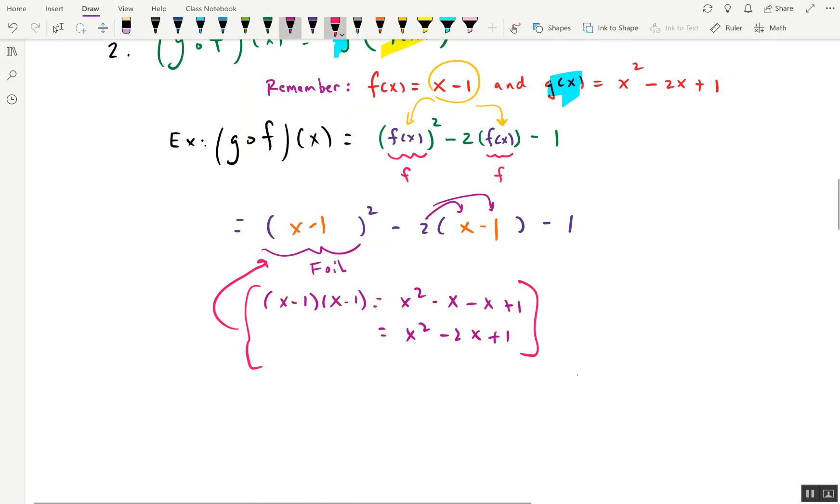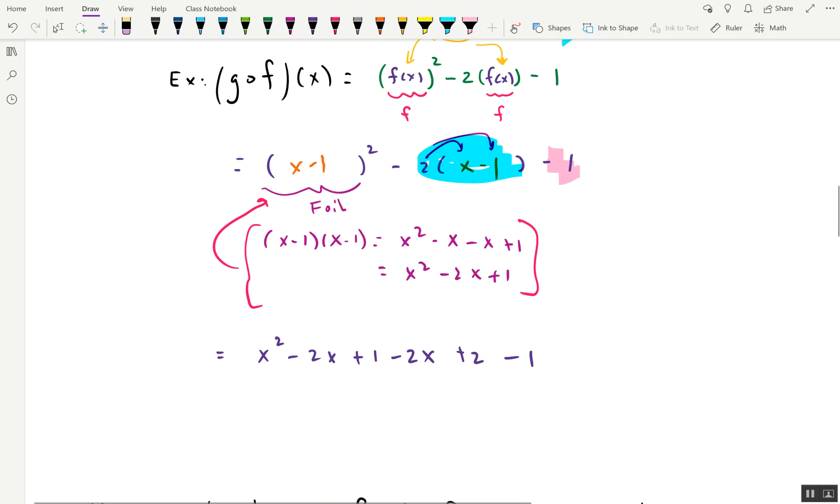When we plug in, well, let's just replace it. Let's do that. So this gives us x squared minus two x plus one. Then we've got a minus. If we look back at this, two times x gives us two x minus two x, sorry. Negative two times negative one gives us positive two. And then we have the negative one hanging out here.